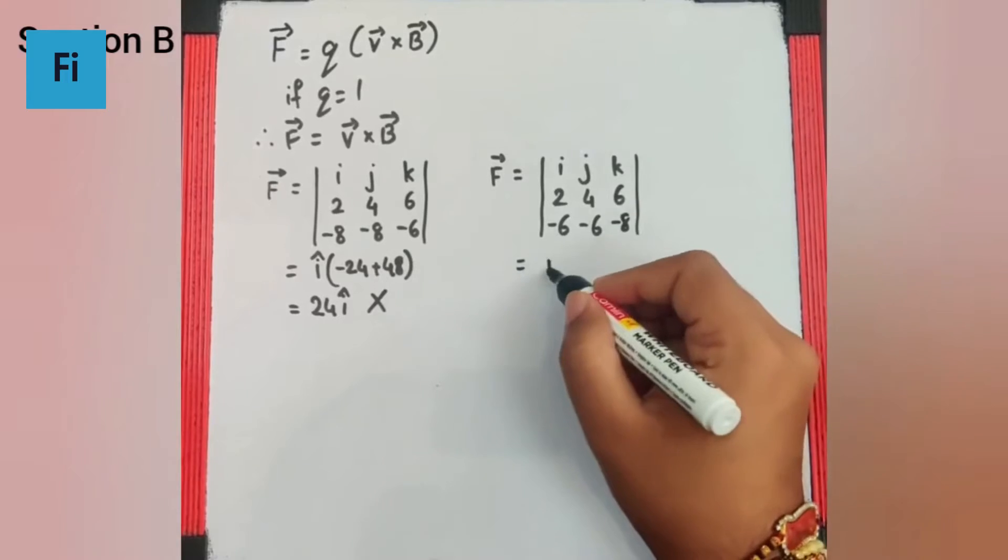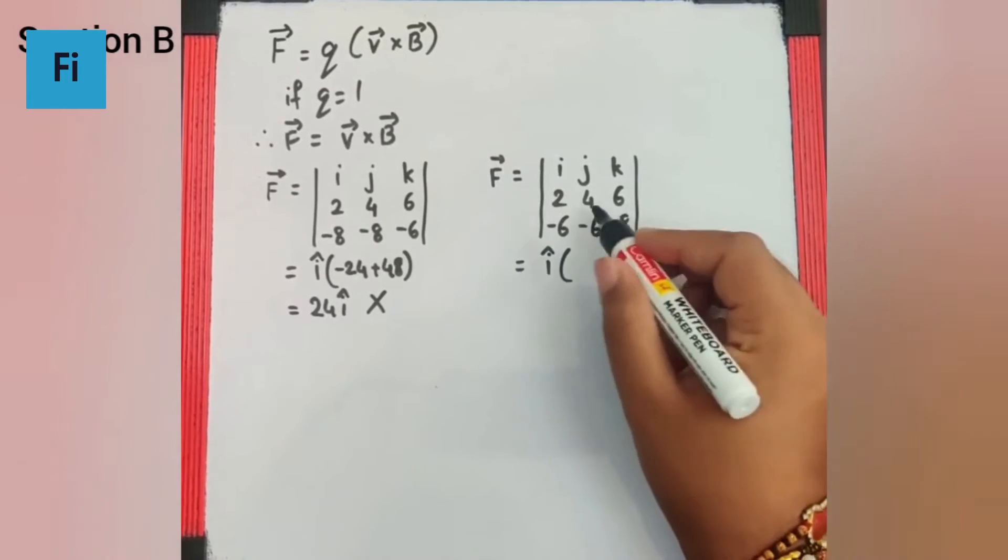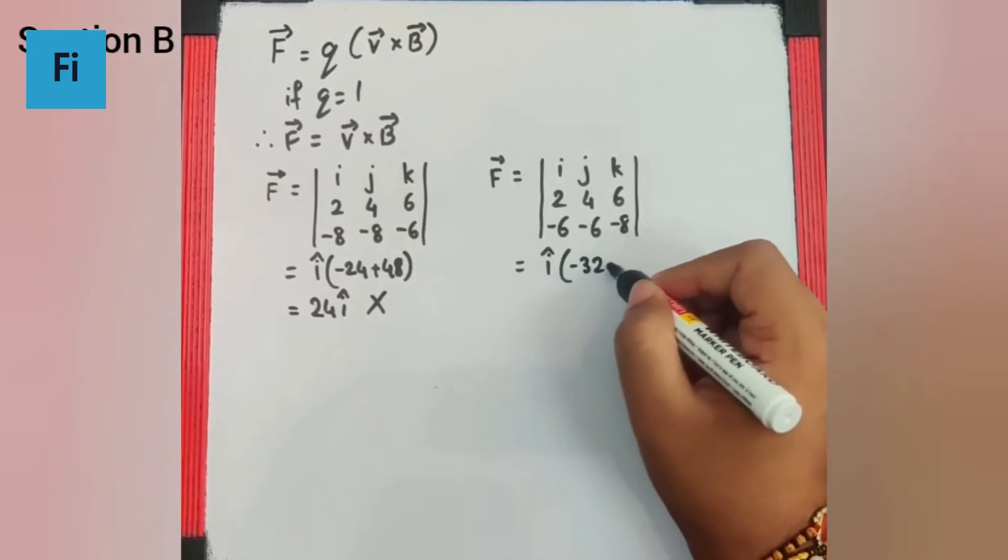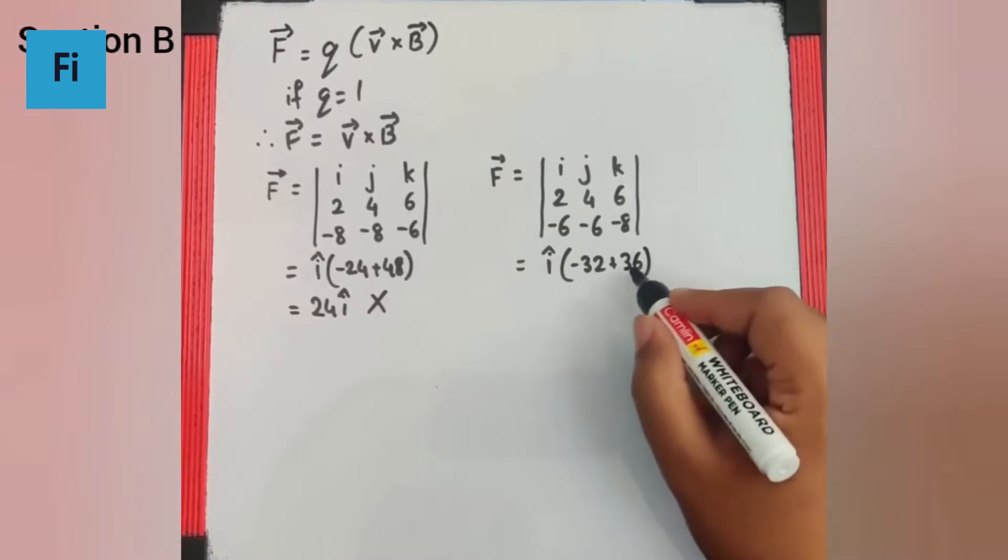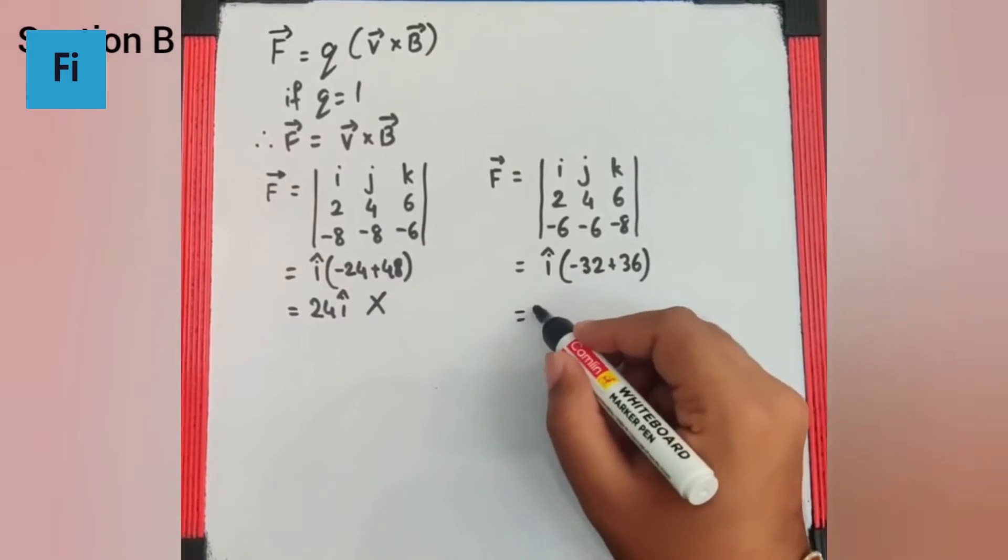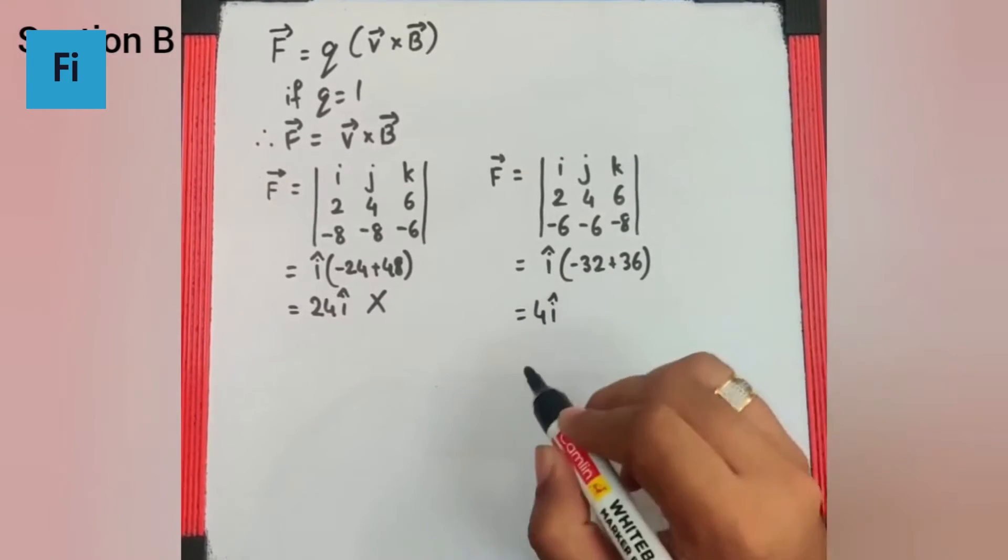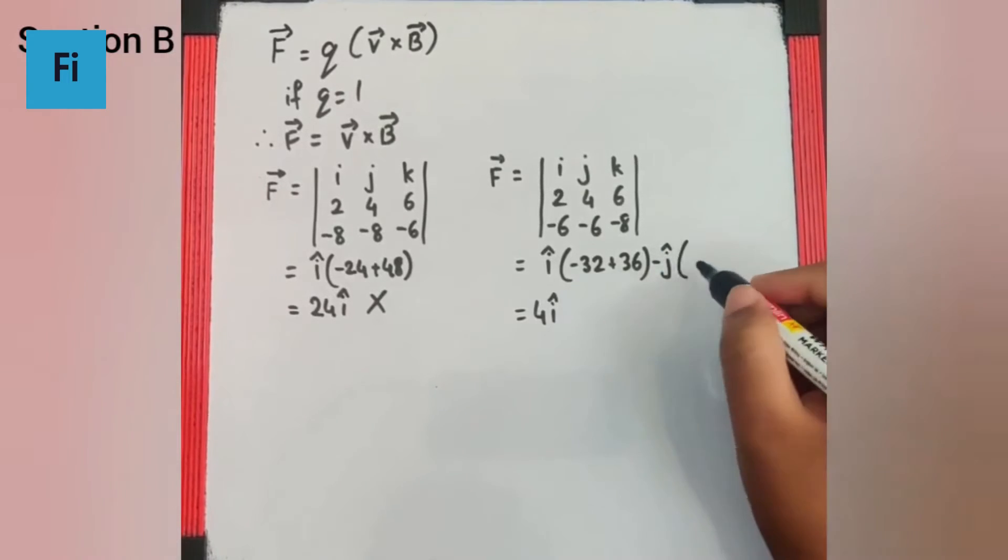So let's see what we get now. So i cap into: 4 times 8 are 32, that's minus 32, minus 6 times 6 are 36, minus minus becomes plus, so this gives us 36 minus 32 as 4i cap. So this first part is definitely correct.